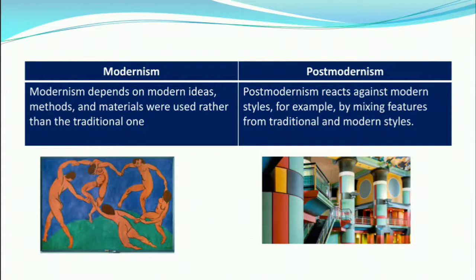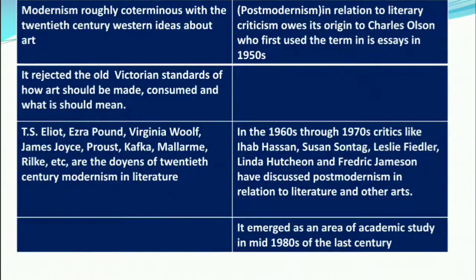Postmodernism reacts against modern styles, for example by mixing features from traditional and modern styles. In modern art or modern literature, you could find only modern elements. But in postmodern literature or postmodern art, you can find a mixing of both traditional and modern styles. Look at the pillar in this building — the pillar is a traditional one but it is built with modern style.